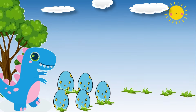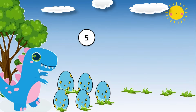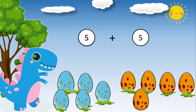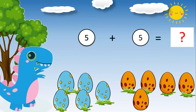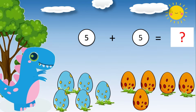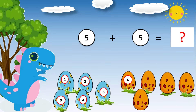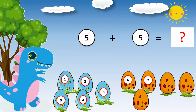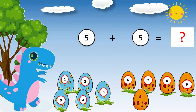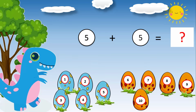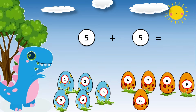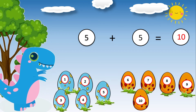Five dinosaur eggs plus five dinosaur eggs plus five dinosaur eggs is equal to what? Do you want to know the answer? Let's add one, two, three, four, five, six, seven, eight, nine, ten. Five plus five is equal to ten.